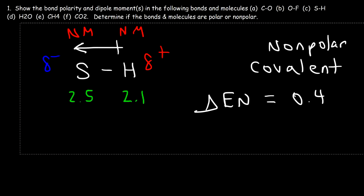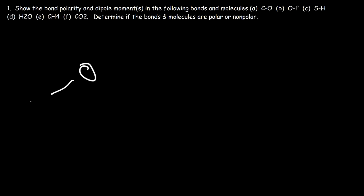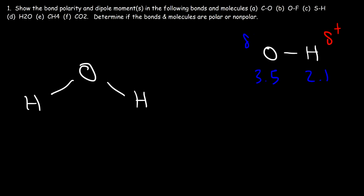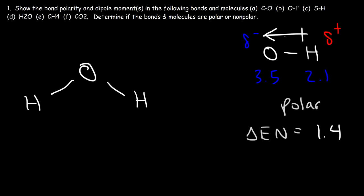Now what about molecules? Here's a simple Lewis structure of the H₂O molecule. Given this molecule with its appropriate geometry, we indicate the bond polarity and dipole moment by focusing first on the oxygen-hydrogen bond. Oxygen has an EN value of 3.5 and hydrogen is 2.1, so oxygen bears the partial negative charge and hydrogen bears the partial positive charge. The electronegativity difference is 1.4, much greater than 0.5, making this a polar covalent bond. The dipole moment points towards the oxygen atom.